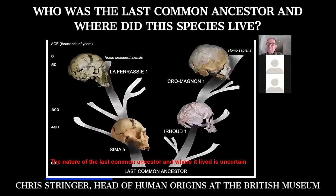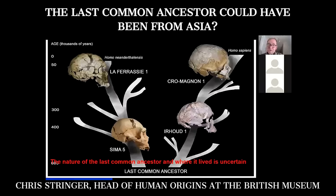Geneticists estimate that we had a common ancestor with the Neanderthal lineage probably more than 500,000 years ago, but who that ancestor was and where that ancestor lived is now much less certain. It may have been a species called Homo heidelbergensis, but that is no longer sure, and it's unclear whether that common ancestor lived in Europe, Asia, or Africa.